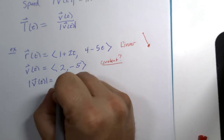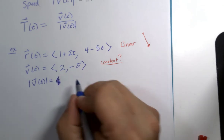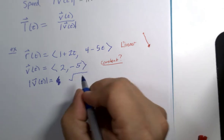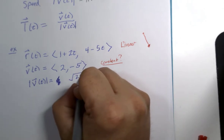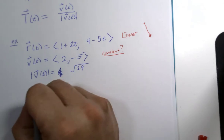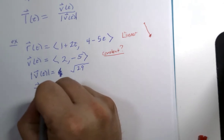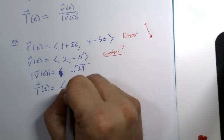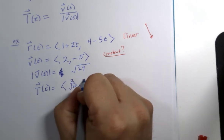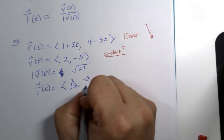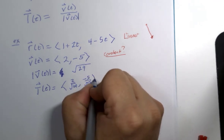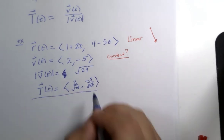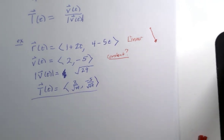I think you will find that the speed is square root of 29. So, therefore, the unit tangent vector is 2 divided by root 29, negative 5 over root 29, at every point on this graph.